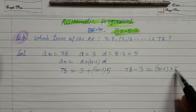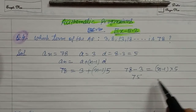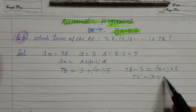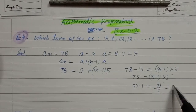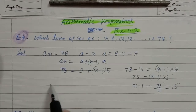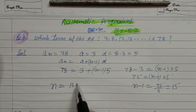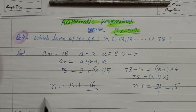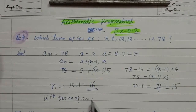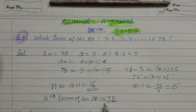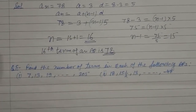78 minus 3 is equal to n minus 1 into 5۔ یہ آگیا students: 75 is equal to n minus 1 into 5۔ تو n minus 1 کی value آگئی 75 upon 5 یعنی 15۔ n is equal to 15 plus 1 تو 16 آگیا۔ یعنی 16th term of the AP is 78۔ یہ اس کا answer ہو جائے گا۔